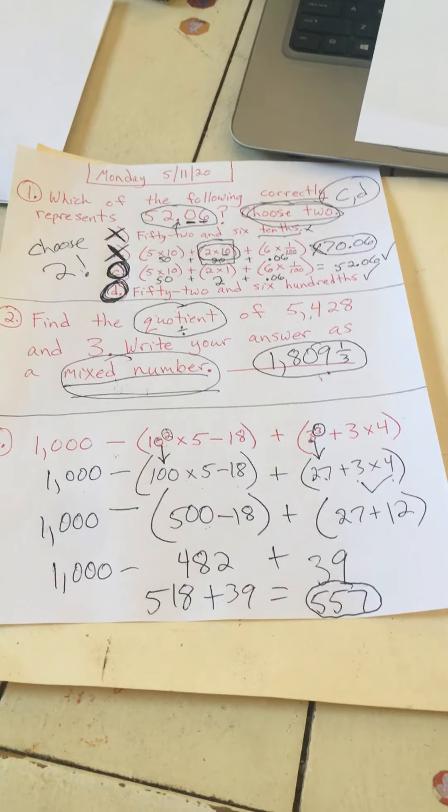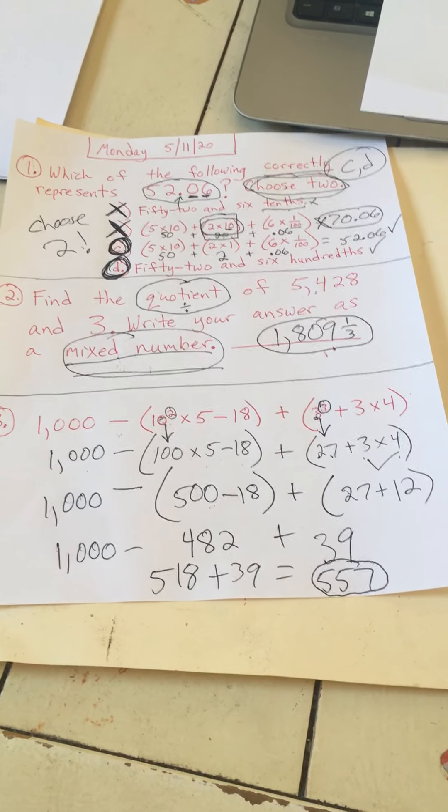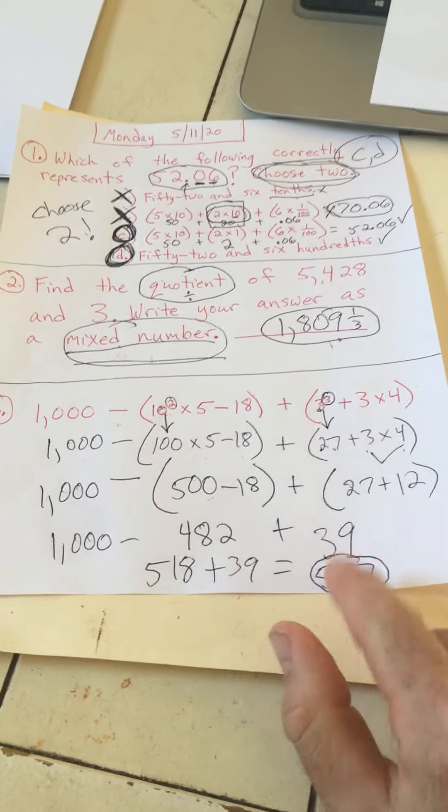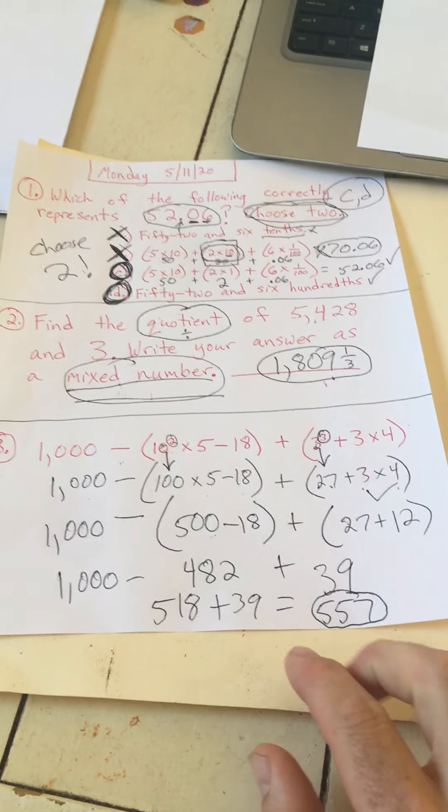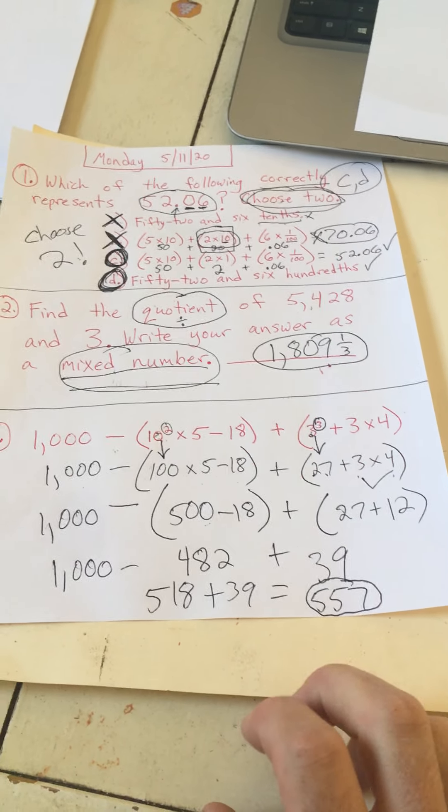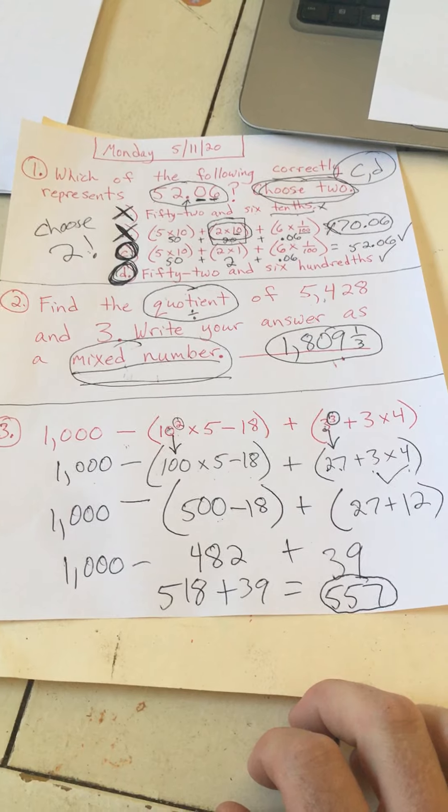And that was a tough order of operations problem. But 557 is the answer to that problem. Give yourself some snaps. That was a tough problem today. Order of operations. I want to see how you guys do with those. Let me know if you're still a little bit confused. But that was pretty complicated. So nice work. Great job. Hope you have a great Monday. See you later.